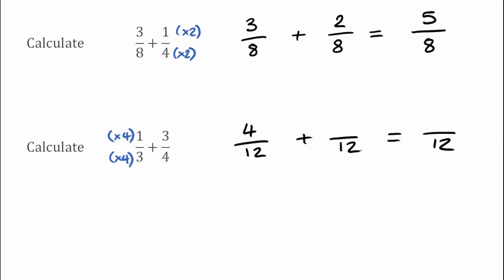For the 3 over 4 we take a look at that 4 on the bottom — we've multiplied that by 3 to get to 12, so to keep things equivalent we've also done that to the top. So we'd have had to multiply the 3 by 3, which gives 9. Now the denominators are the same, so 4 over 12 add 9 over 12 is just 13 over 12.